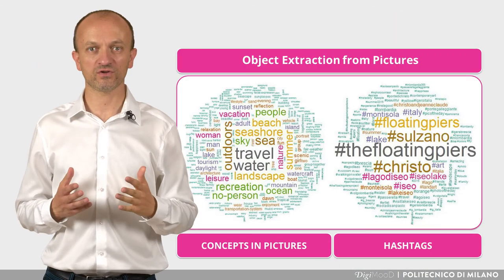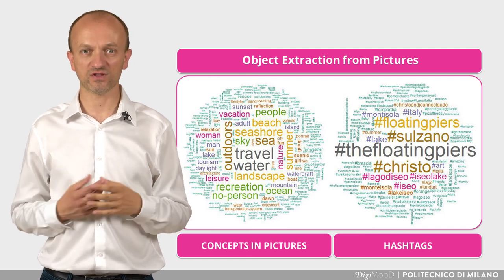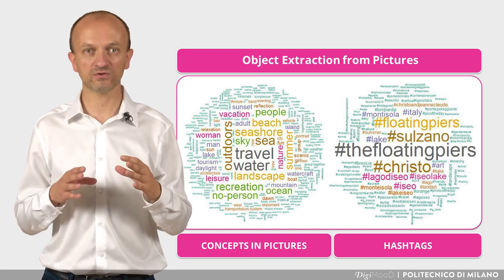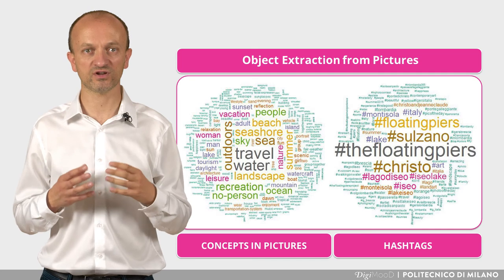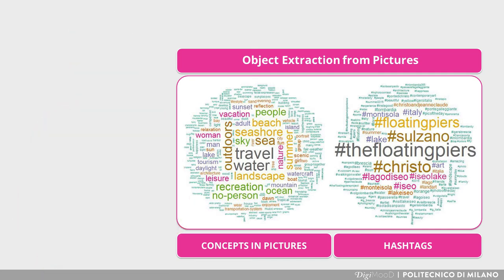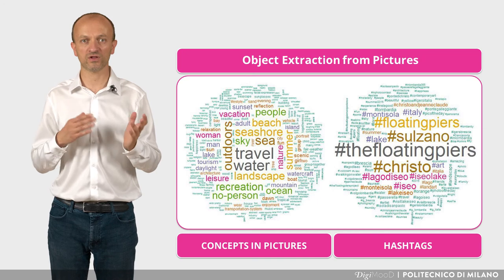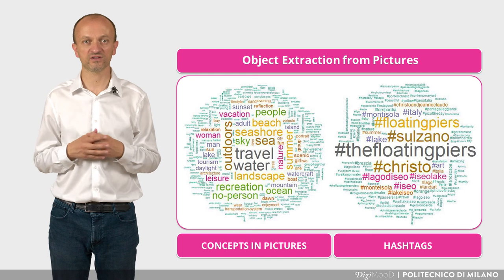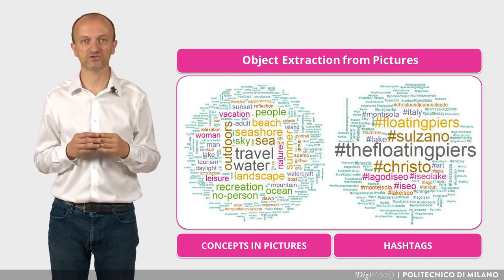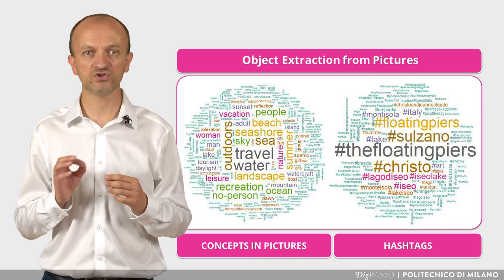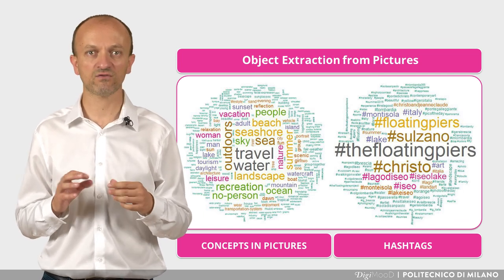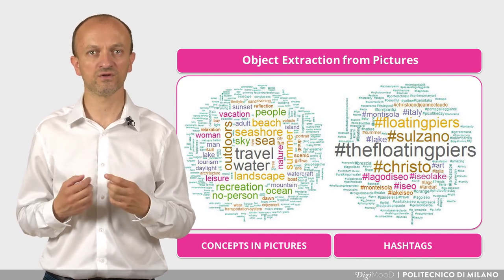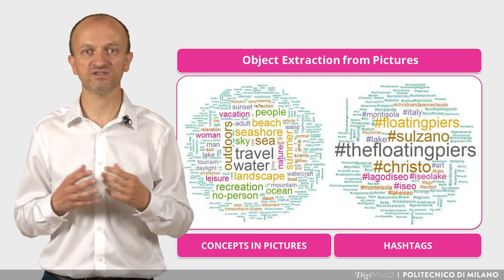We can also recognize the objects present in the posted photos, again using deep learning techniques. The word cloud on the left shows the frequencies of objects and concepts in the photos. We can compare or integrate this with what people say in the captions, comments or hashtags of the photos, as reported in the picture on the right. We can see that the two extractions have very limited overlap, meaning that people write things that are different or more informative than what can be seen in the pictures.